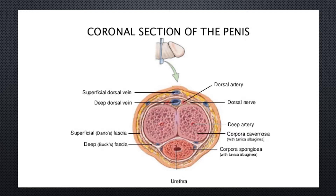There are two structures called the superficial dartos fascia and the deep dartos fascia. The dartos is a layer of connective tissue found in the penile shaft, foreskin, and the scrotum. The penile portion is referred to as the superficial fascia of the penis or subcutaneous tissue of the penis, while the scrotal part is the dartos proper. In the scrotum, it consists mostly of smooth muscles.